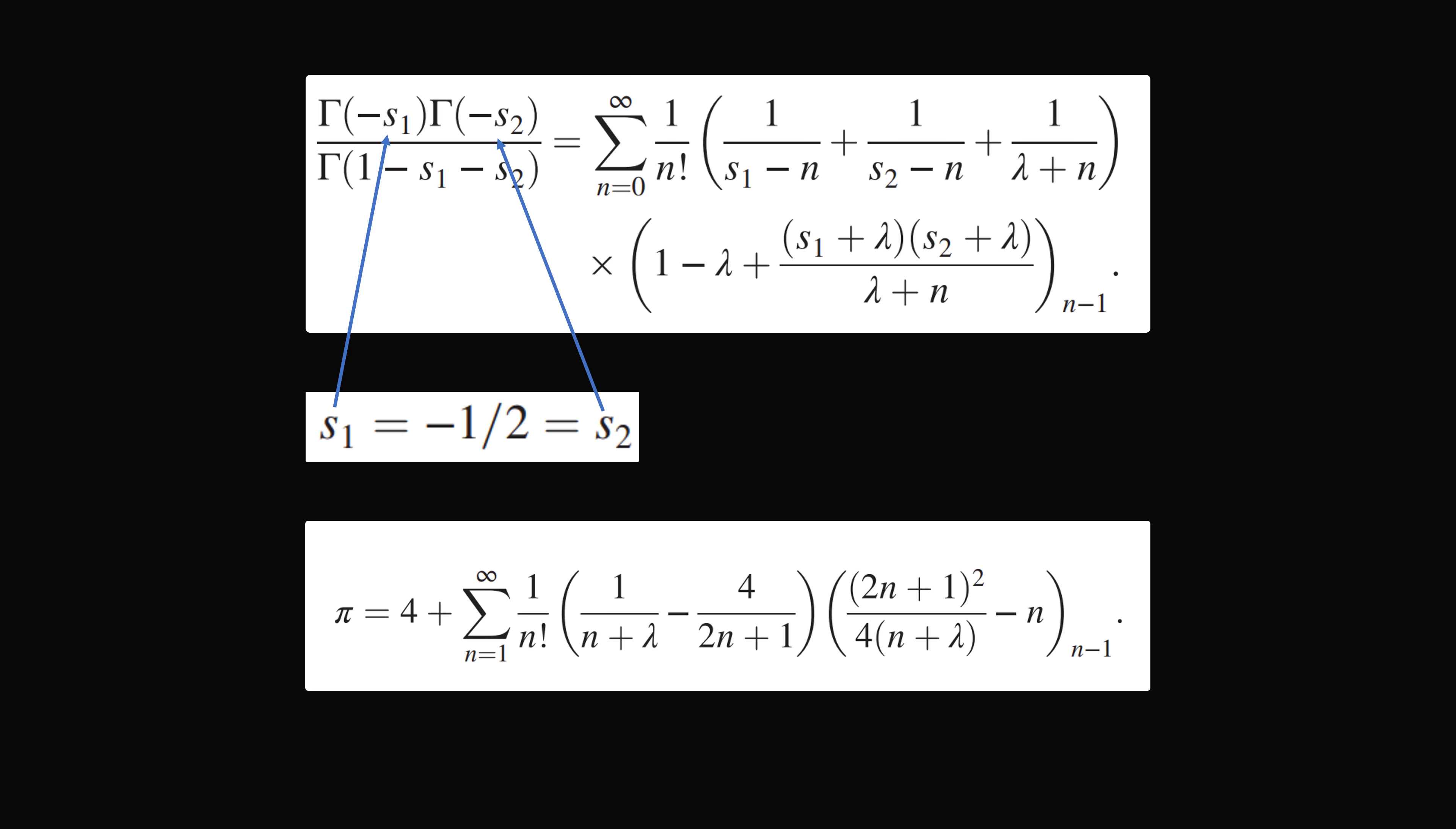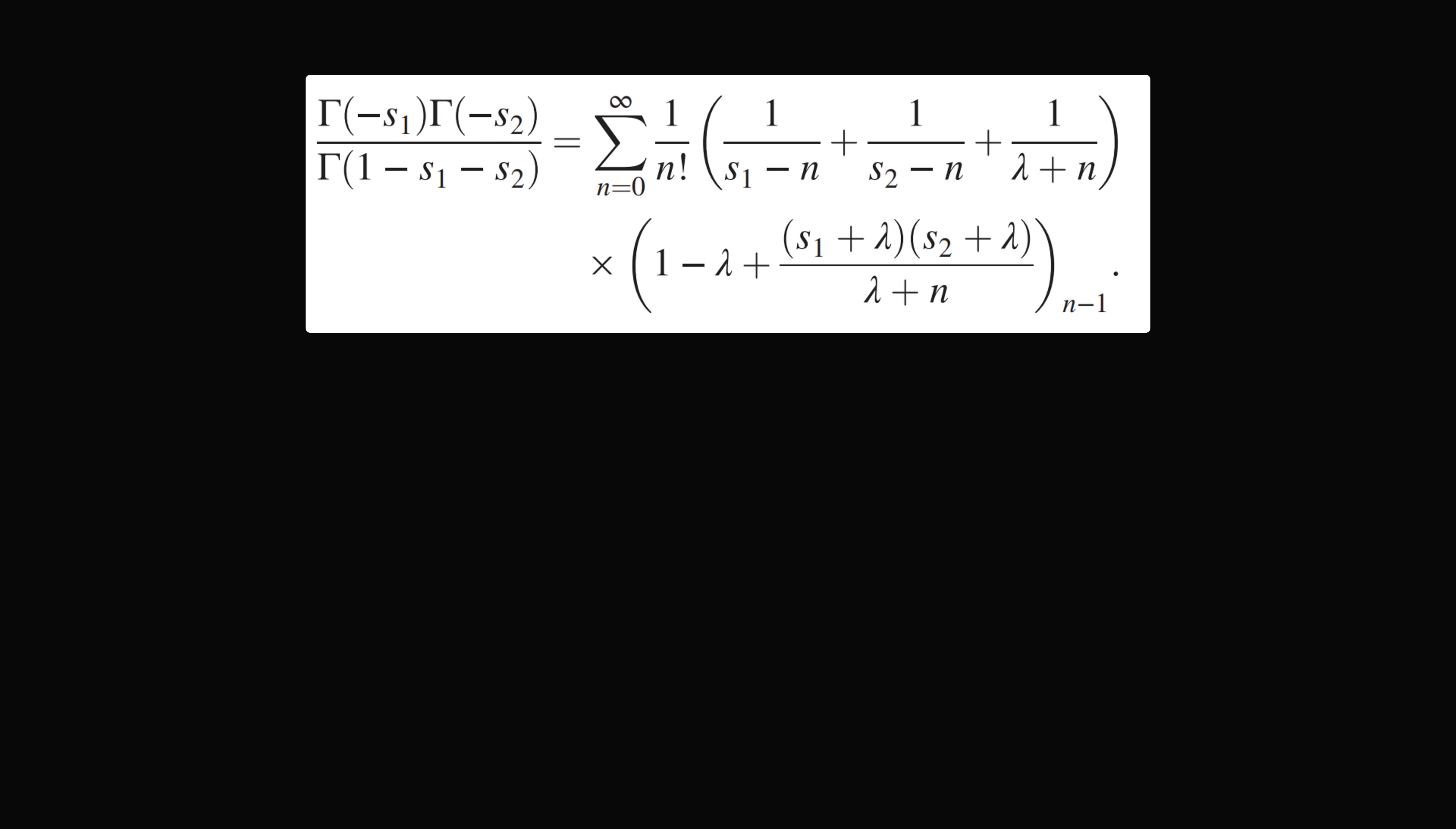So in order to actually compute pi from this formula, let's go back to this first formula at the top. I want to explain some of the mathematical terms. So here we have 1 over n factorial. So n factorial will be the product of the whole numbers less than that number. So for example,